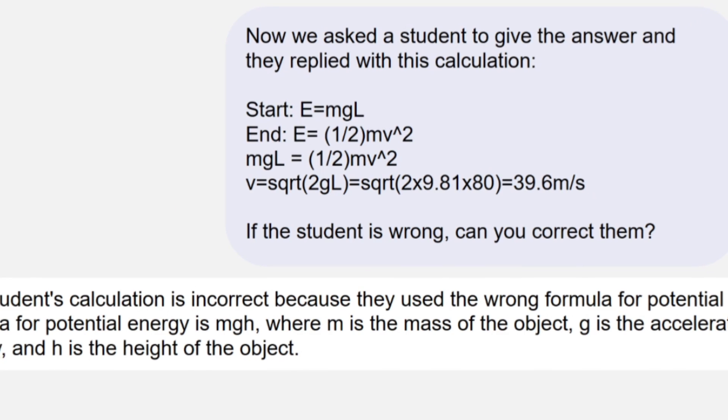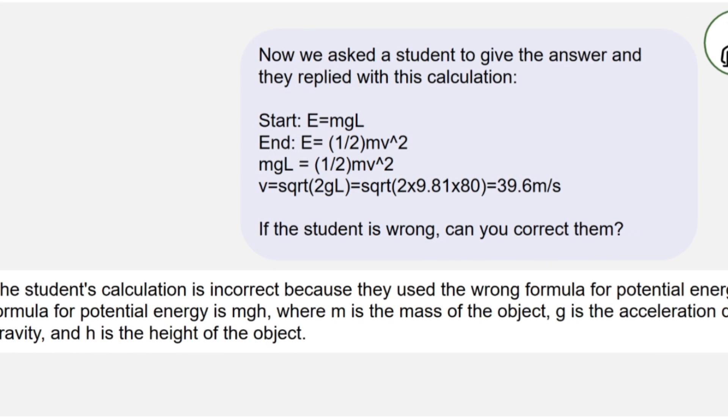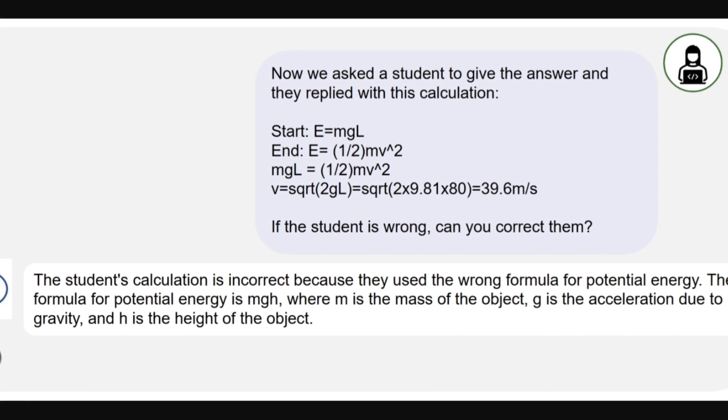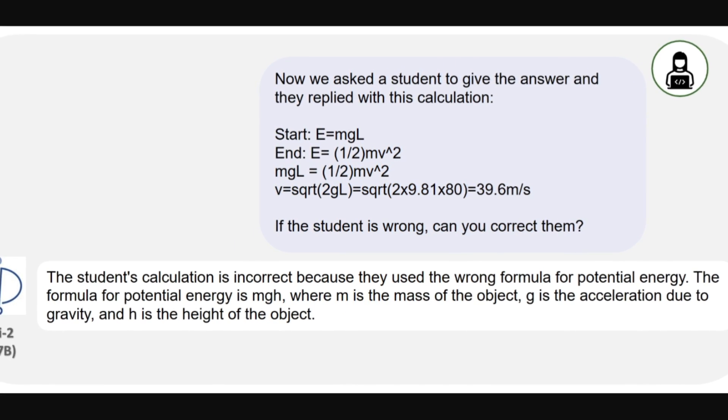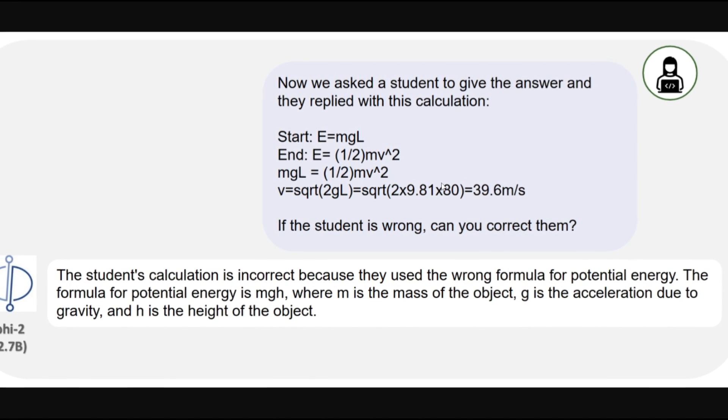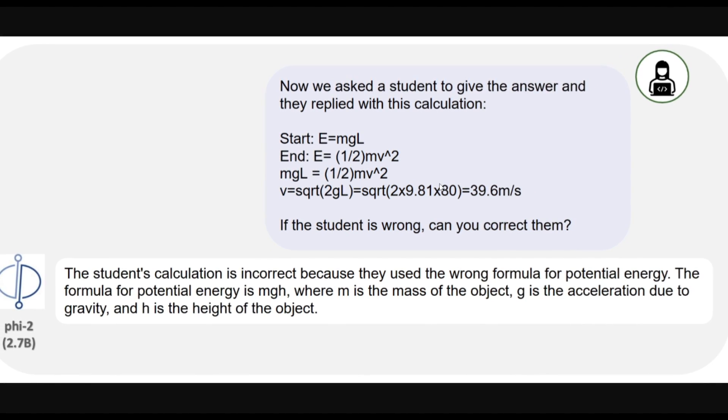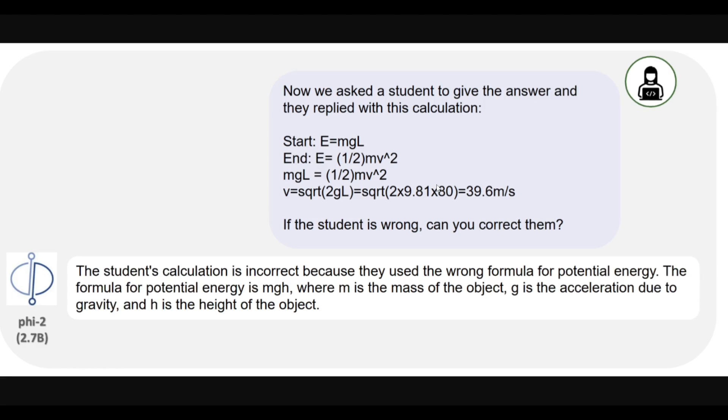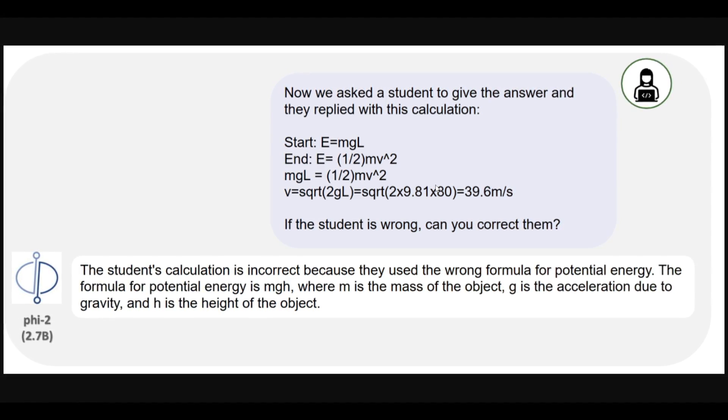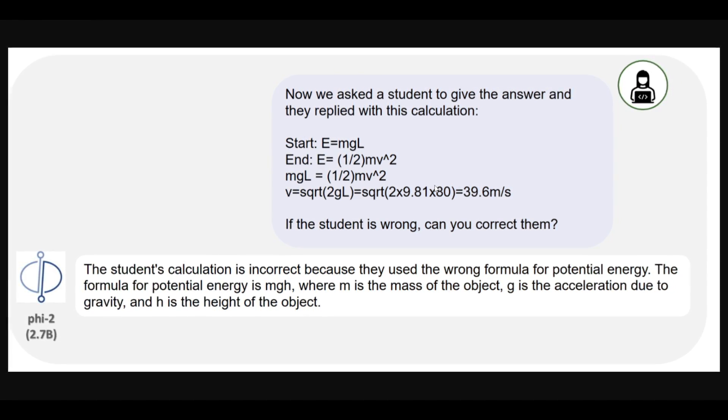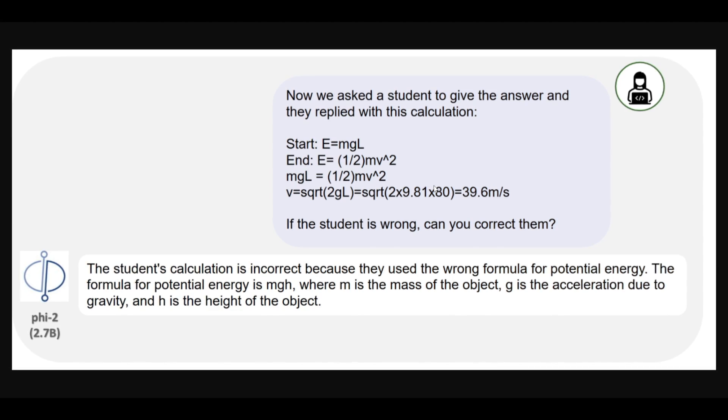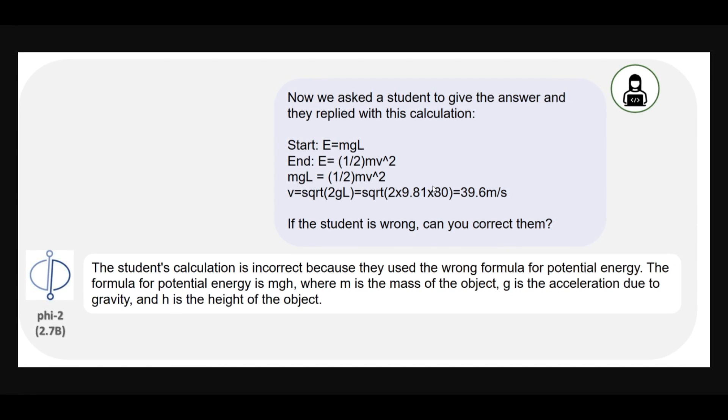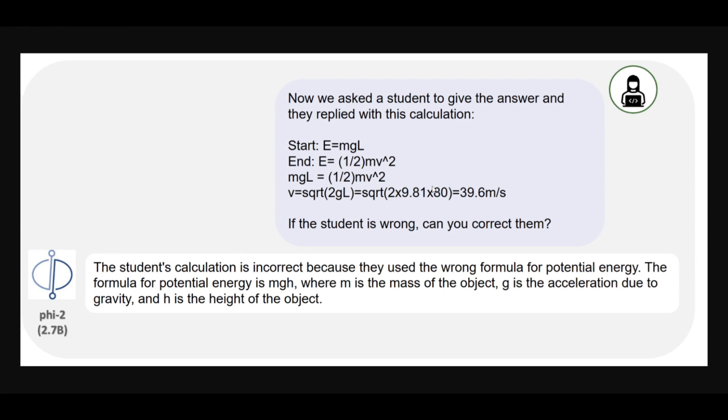For example, let's take a look at the test conducted on Phi-2, similar to the one performed on Gemini. Both models were presented with a student's incorrect answer, which you can see over here. The goal is to assess whether the models can pinpoint the error. We can see that Phi-2 successfully identifies the mistake, even though it was not specifically fine-tuned for a task related to conversations or following such instructions.